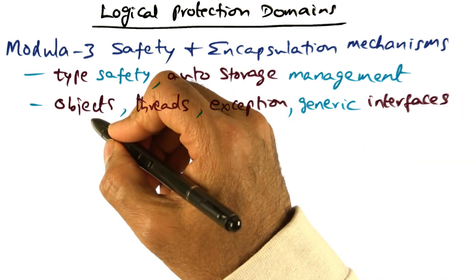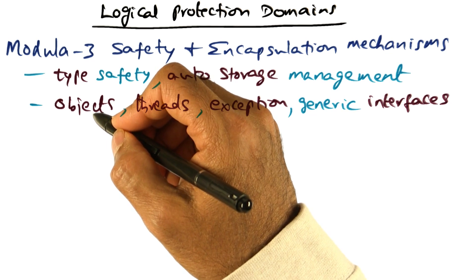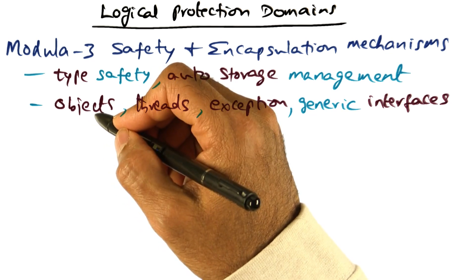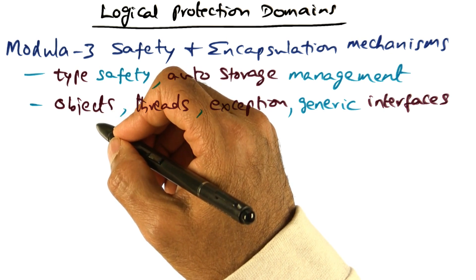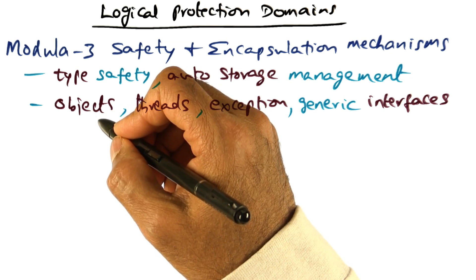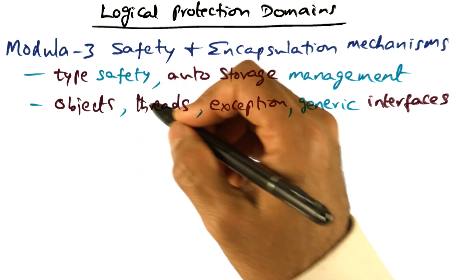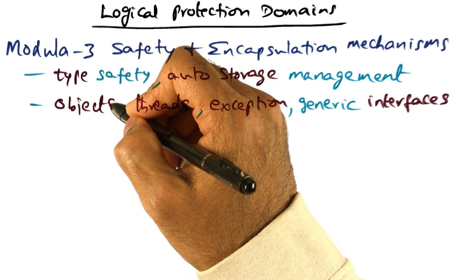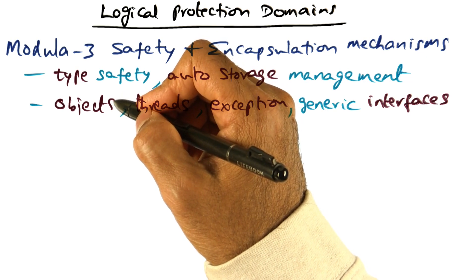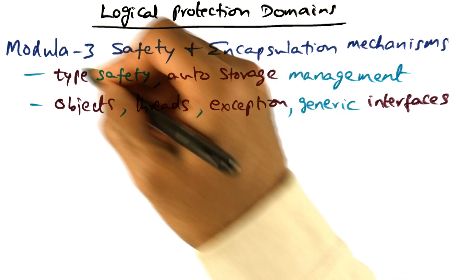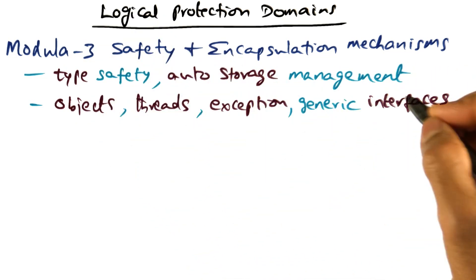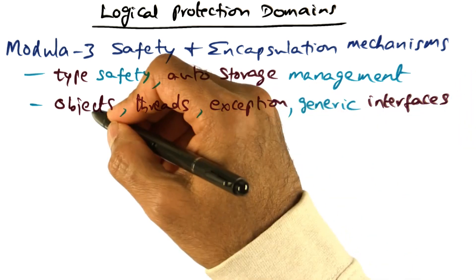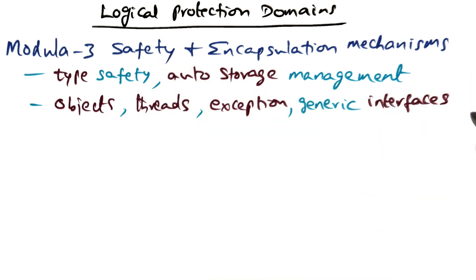Modular 3 supports a data abstraction called an object with well-defined entry points. Only the entry points are known outside the object, not the implementation of the code for the entry point or the data structures contained within an object. There's no cheating possible as you can do with a language like C. Modular 3 allows exposing the externally visible methods inside an object using generic interfaces.